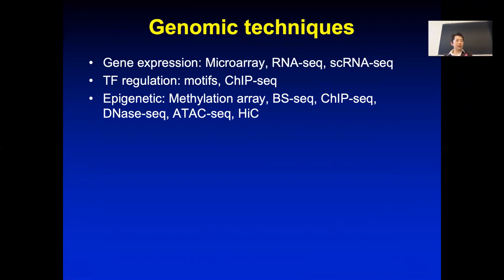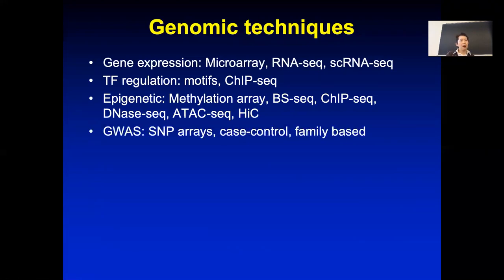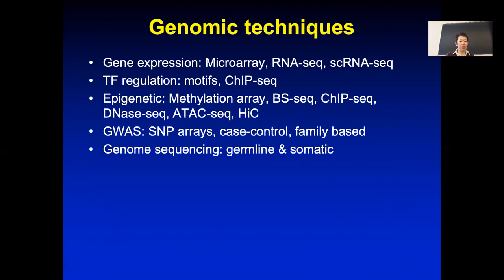We also look at Hi-C, which examines higher-order chromatin interactions. For GWAS studies, people initially used SNP arrays with case-control or family-based studies, but recently it's all moving to sequencing — whole exome sequencing and whole genome sequencing. Genome sequencing has two types: germline, which is essentially your blood or a mouth swab where all cells have the same DNA,